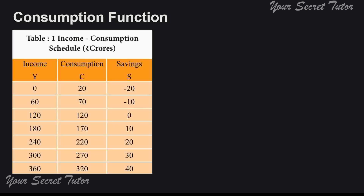In the schedule we will see the income-consumption pattern, along with savings in the third column. When income Y is zero, consumption is 20. That is a constant amount — irrespective of income, whether you are earning or not, there is still some consumption. When your income is zero and you are still consuming, that type of consumption is called autonomous consumption.